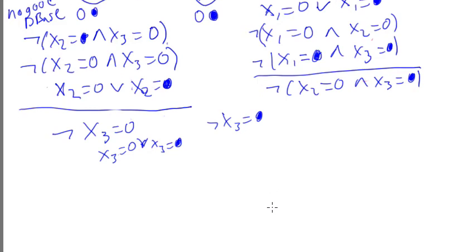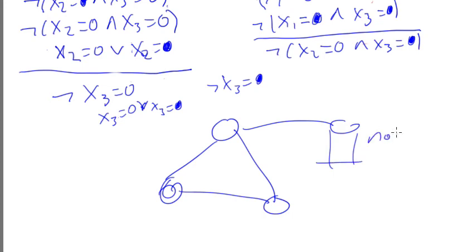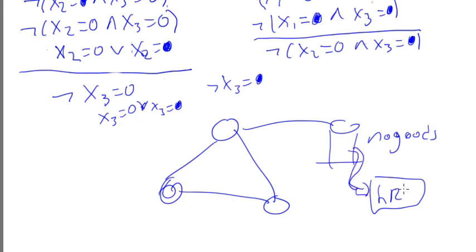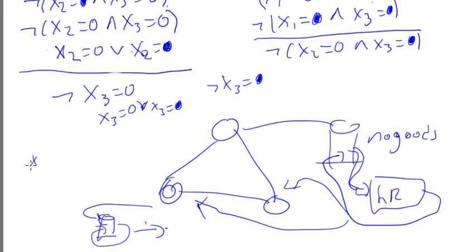That's basically how hyper-resolution works. Going back to the picture, each node is an agent with a database of no-goods. The hyper-resolution rule acts like an engine that grabs no-goods and creates new ones, puts them back in the database, and the agent also sends them to neighbors as messages. The other agents add them to their own databases and do the same thing — generating new no-goods until they arrive at a solution or prove a contradiction.